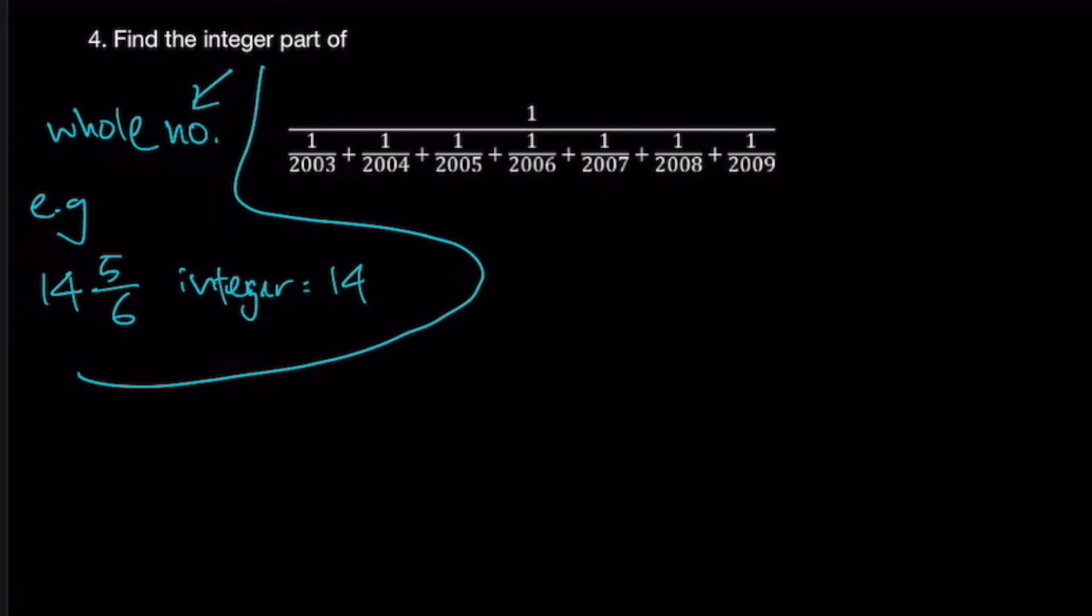Alright, let's look at question 4. Find the integer part of this big fraction right here. So first, let's understand the question. What does integer mean? Integer means your whole numbers. Okay, so for example, I can give you an example. Let's say 14 5 over 6. The integer value will be 14. Okay, so integer value means you ignore any decimal or fractions after the whole number. Alright, so this is the example I'll give you guys.